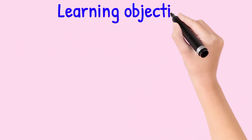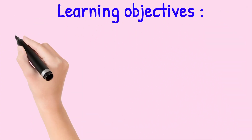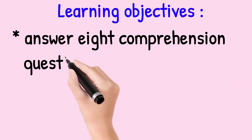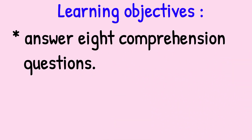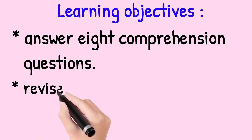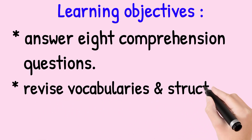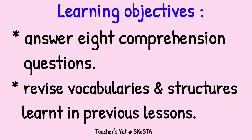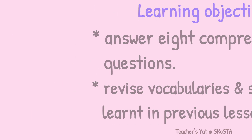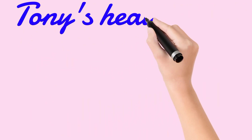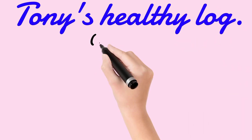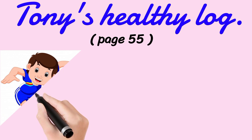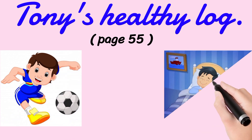Our learning objectives for today: by the end of our lesson, you should be able to, first, answer 8 comprehension questions, and second, revise vocabularies and structures learned in previous lessons. Our topic for today is Tony's Healthy Log. You may refer to your textbook, page 55.